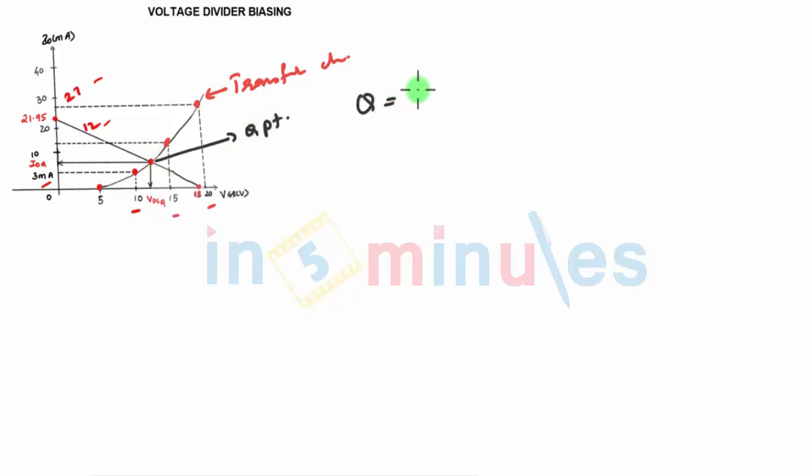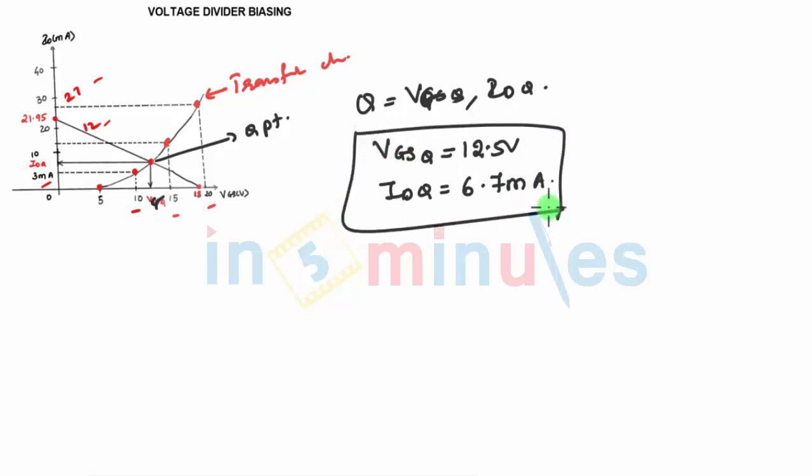The coordinates of Q point is VGSQ. In the previous case, it was same, here VGSQ and VDSQ are different. VGSQ from the graph will be around 12.5 volts and IDQ will be around 6.75 milliampere. When you draw on the graph, you should get these two values from the graph.